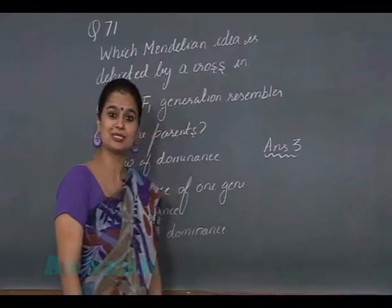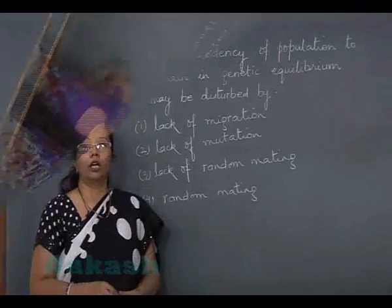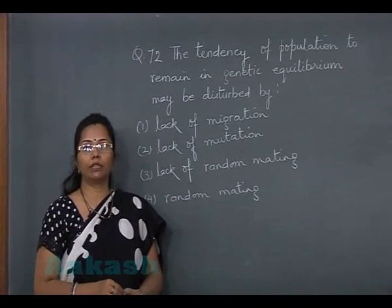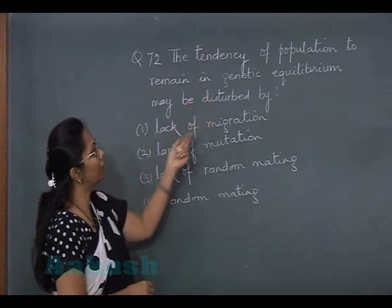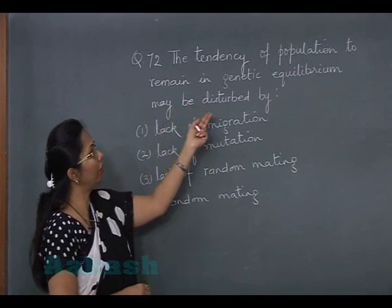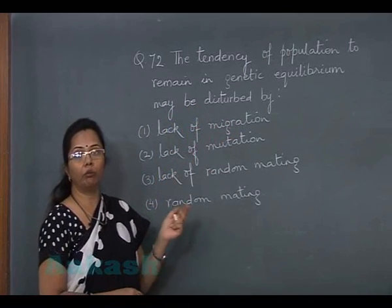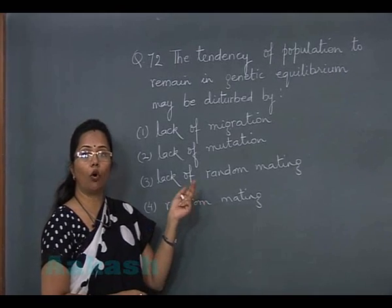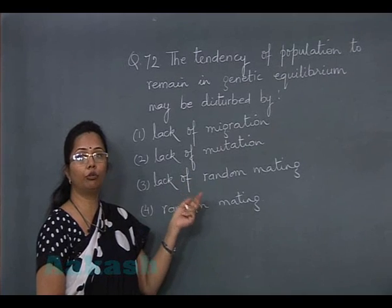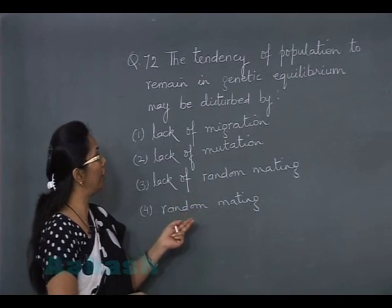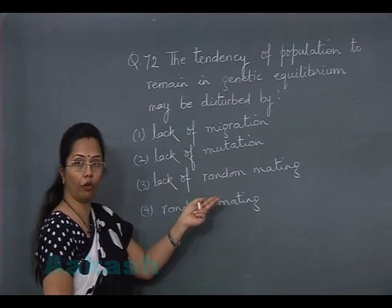Now let's discuss question number 72: the tendency of a population to remain in genetic equilibrium may be disturbed by — this is a question based on Hardy-Weinberg equilibrium, which states that randomly mating populations tend to remain in genetic equilibrium if there is no migration, no mutation, and random mating.